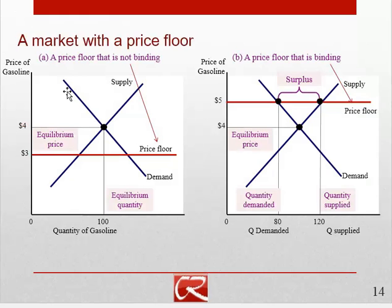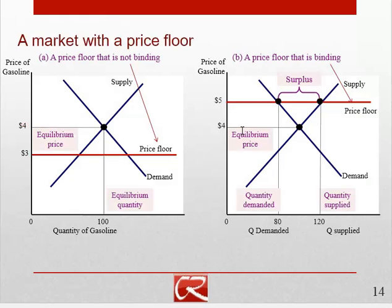For a market where the price floor is below the equilibrium price — for example, if we put a price floor on gasoline of $3 a gallon and it's already selling for $4 — that's not actually limiting anyone's freedom of action. On the other hand, if the price floor is above the equilibrium price, then it's going to cause people to actually do something differently.